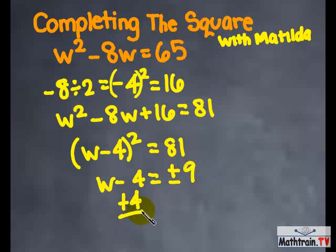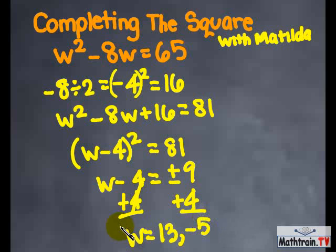You add 4 to each side. And w equals positive 13 or negative 5. And that's all!